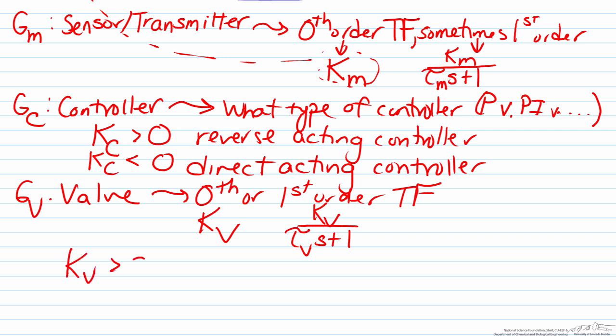So here when KV is greater than zero this will be what is known as a fail closed valve, in other words when the power goes out the valve will be fully closed as a safety criteria, and KV is less than zero will represent the opposite, a fail open valve.